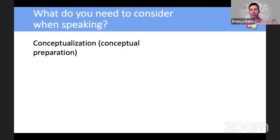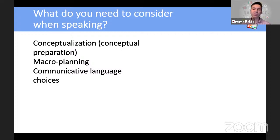The second consideration is macro planning: what do you want to say first, what do you want to say second, and what comes towards the end of this speaking activity? Then there are communicative language choices — maybe questions, idioms, or a specific type of language. If it's formal speech, you want to sound formal. If it's informal chat or small talk with a friend, you want to sound informal, and of course you need to adjust to the situation.